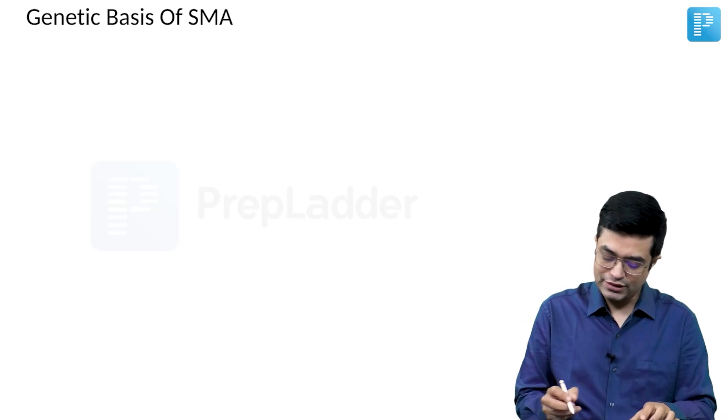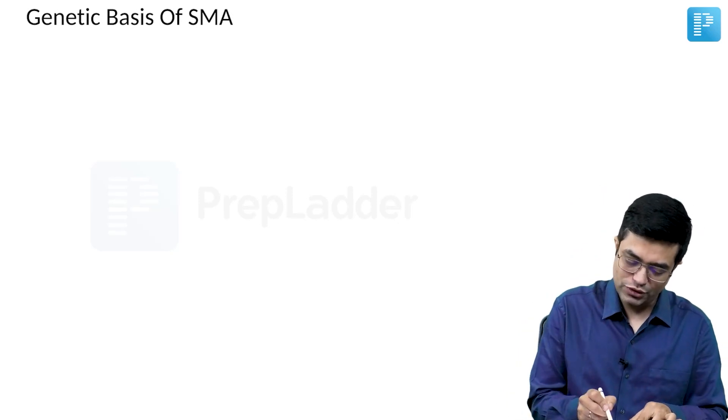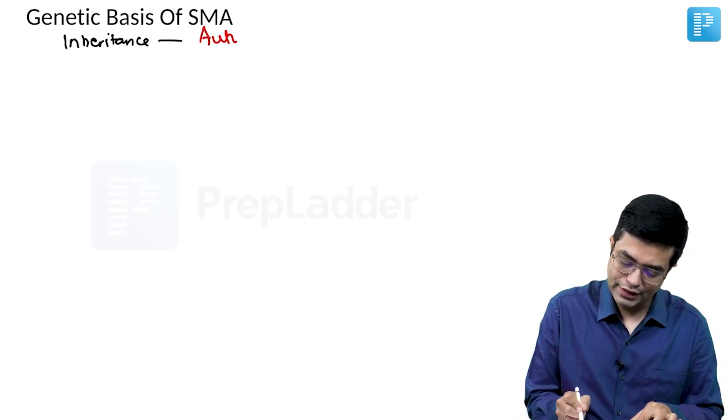What is the genetic basis of SMA? First thing you need to know is it shows an autosomal recessive inheritance.